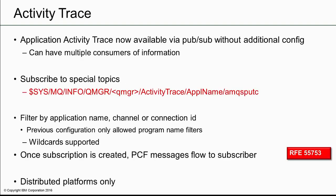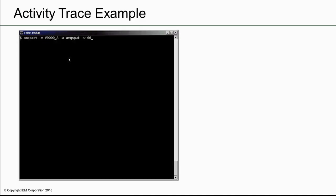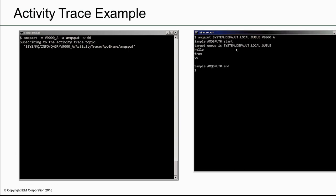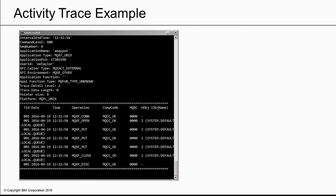Application Activity Trace is a way on distributed platforms of getting information about the MQ API calls made by an application. That might be used for problem determination, audit trails, checking application design, or a range of other reasons. The need to support multiple use cases means it is convenient to have the data published to a topic instead of just put to a single queue. We also wanted to make the configuration of which programs to track much simpler than editing an ini file. So now you can subscribe to a topic, and trace of the selected processes will be delivered to your personal destination queue. You can choose to track applications by name or by server connection channel name, based on the topic chosen. We can see an example here, formatted by the sample program AMQSACT, which is looking for activity from AMQSPUT.